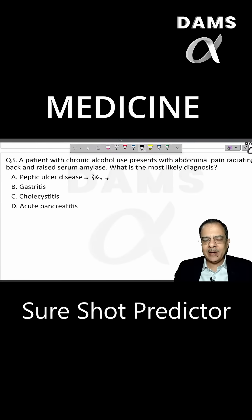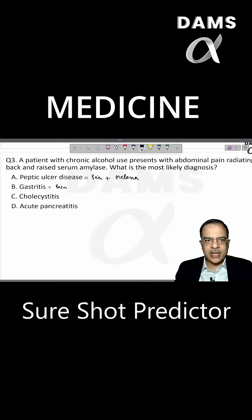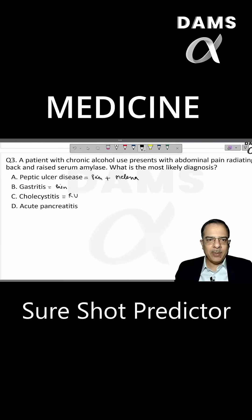Peptic ulcer disease will be associated with melena. Gastritis will present with pain only, with no rise in serum amylase. Cholecystitis will be characterized by right upper quadrant pain — that will be the hallmark.